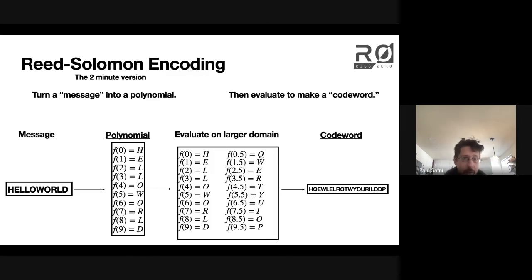So there's some choices that you could make along the way here. I added one point in between every point, so my larger domain is twice as large as my original domain. You could make it three times as large or four times as large, so there's a sort of choice here. But roughly speaking, this is the process.